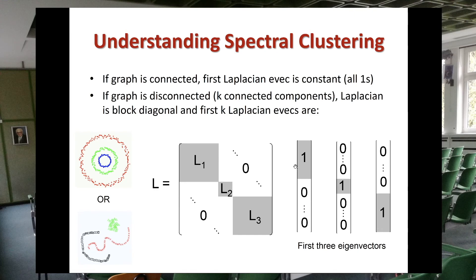Looking at the eigenvectors computed from this Laplacian, you will see eigenvectors that contain ones for all points in a block and zeros elsewhere. So by looking at the ordered Laplacian, you can see how many clusters are in your data set.